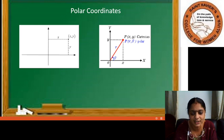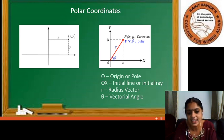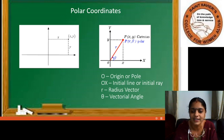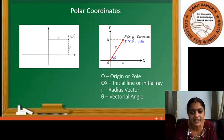Here we are using a fixed point O called the origin or pole, and a fixed line OX called the initial line or initial ray. The distance of P from the origin, R, is called the radius vector, and the angle theta made by OP with the X-axis is called the vectorial angle.